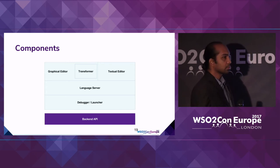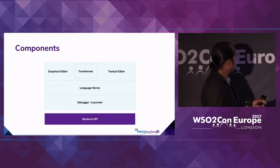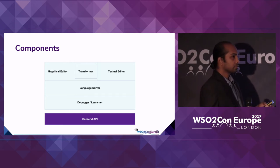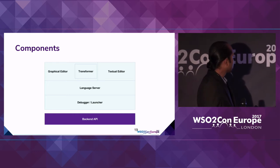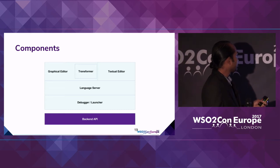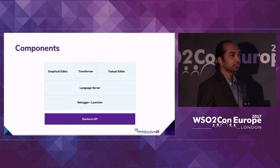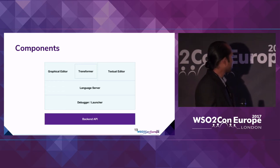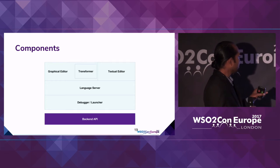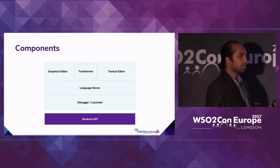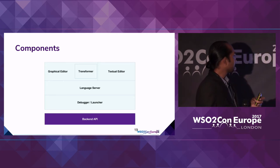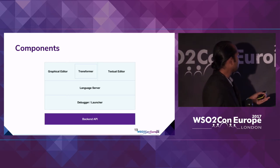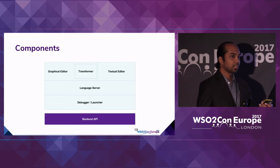Let's talk about the high-level components of the Composer. There are mainly two user-engaging aspects: the graphical editor and the textual editor, which sit side by side. We also have a special tool called Transformer, which you can use for data mapping and transformation activities. Additionally, we have two cross-cutting features — language server and debugger/launcher — that support both the graphical editing experience and the textual editing experience. For example, you can debug a Ballerina program both graphically and textually.